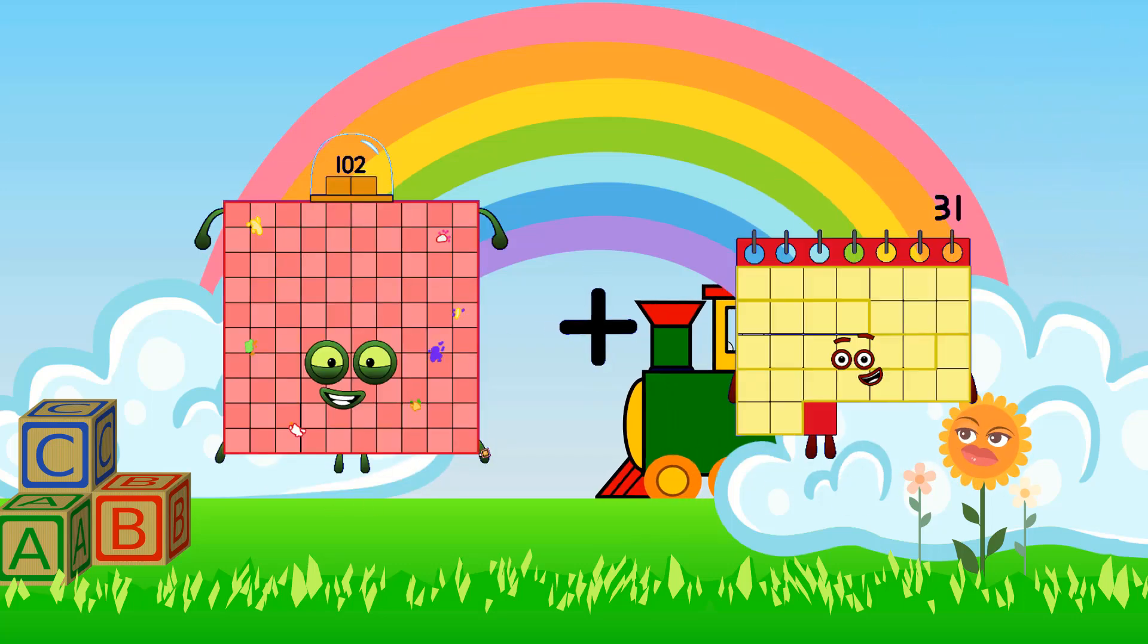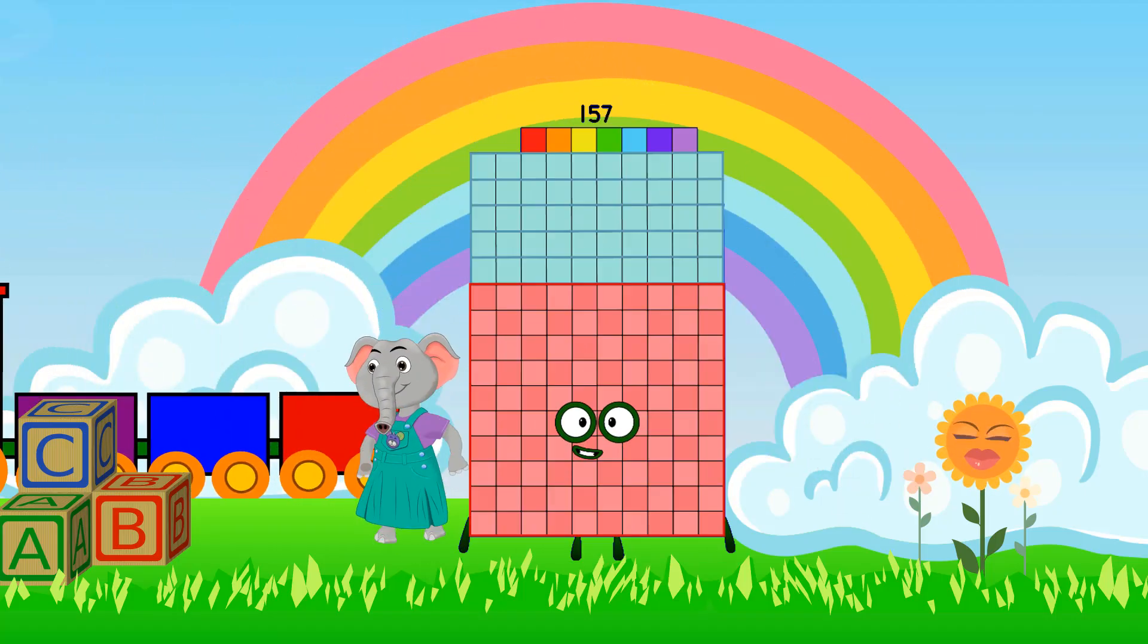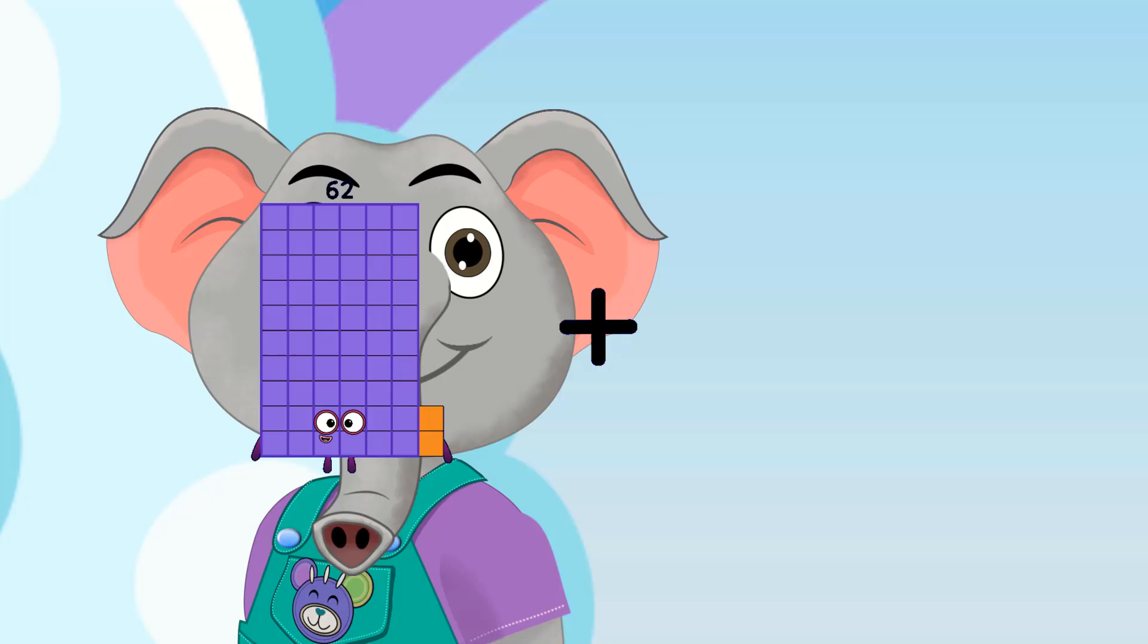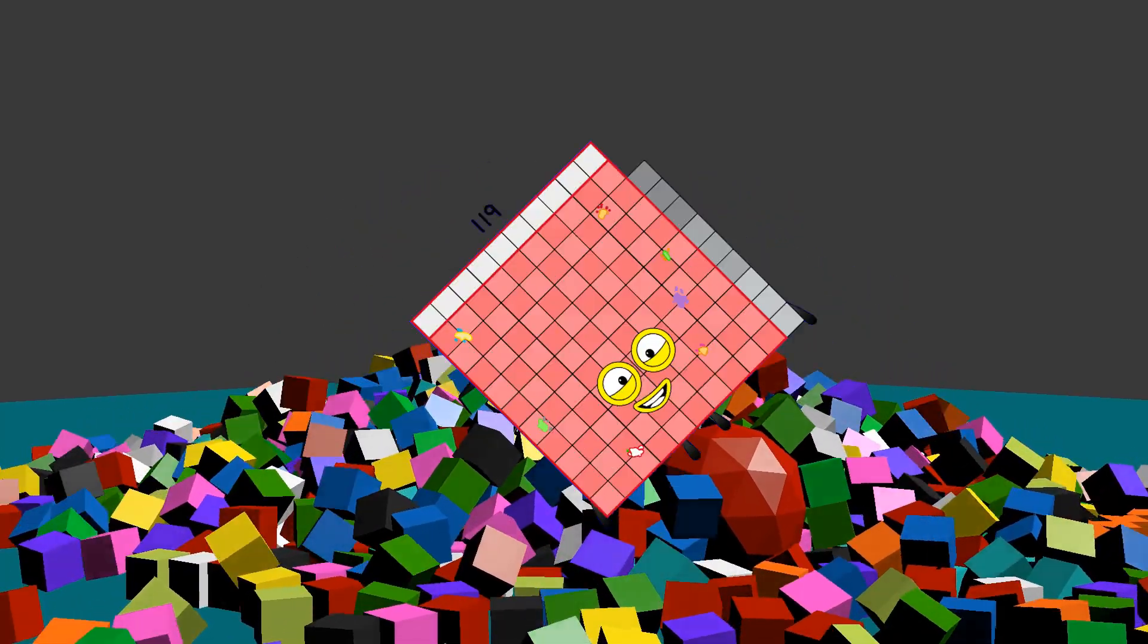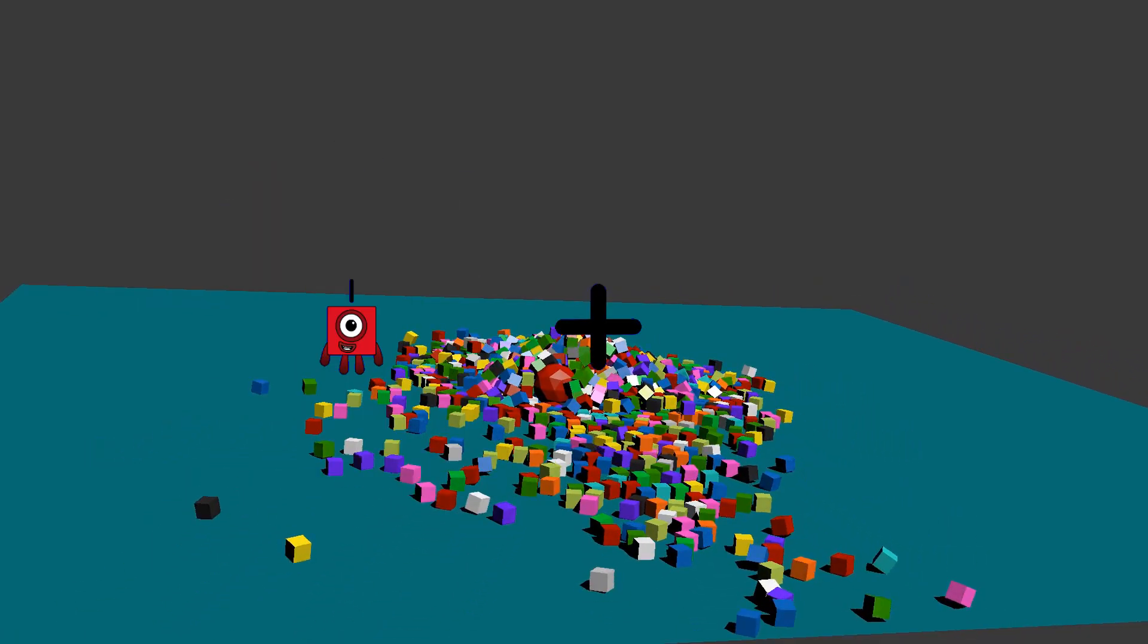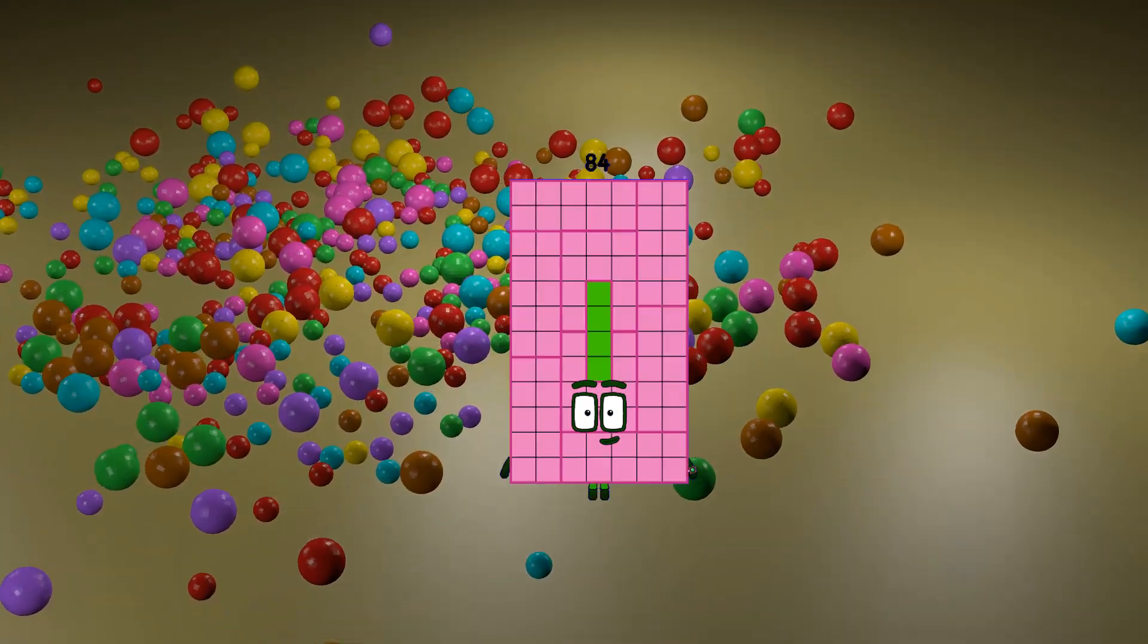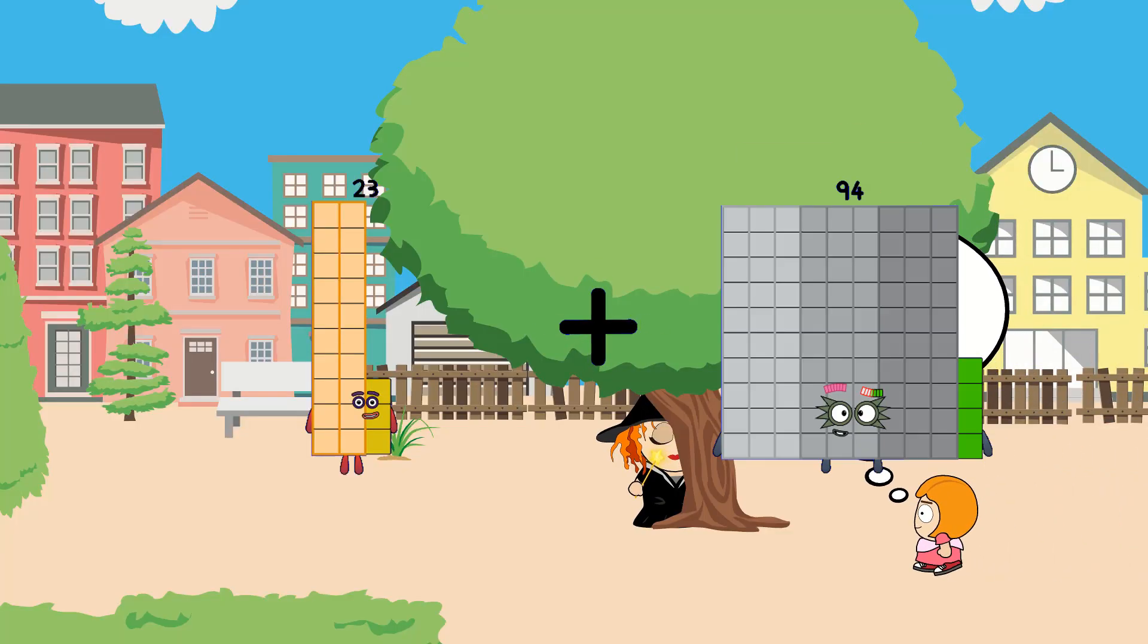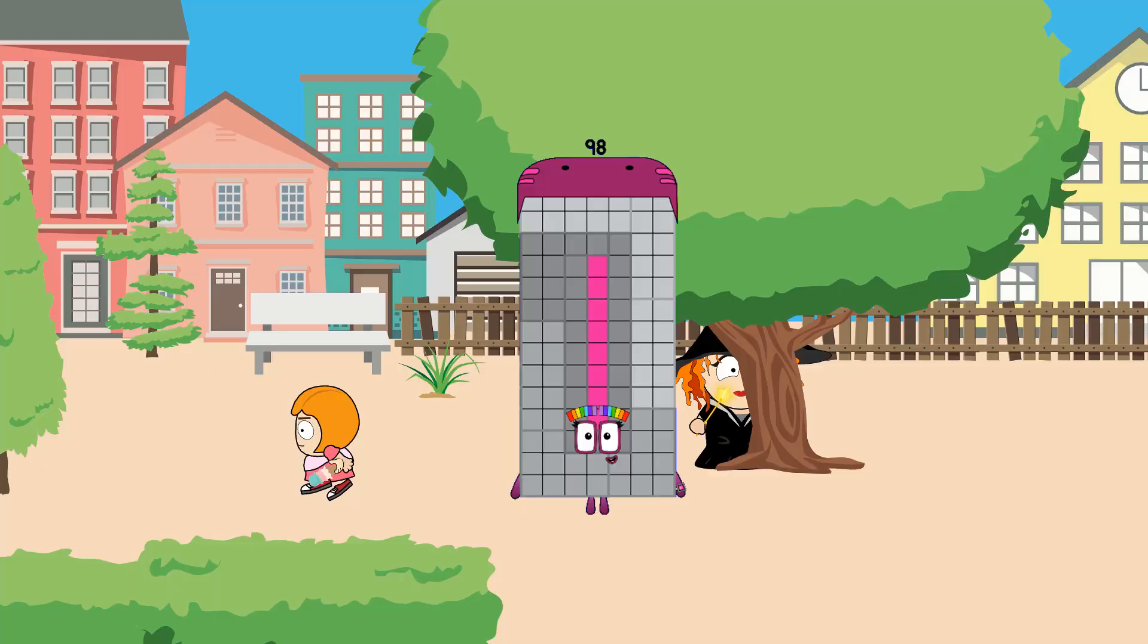102 plus 55 equals 157, 62 plus 57 equals 119, 1 plus 83 equals 84, 23 plus 75 equals 98.